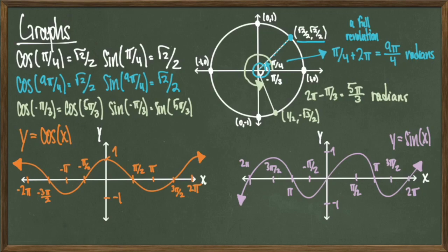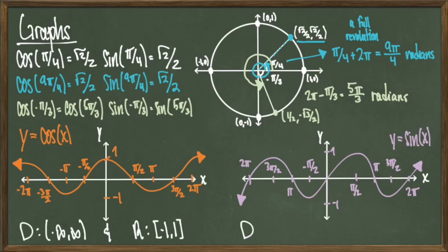Some basic properties of these functions are that they both have the same domain and range. The domain for sine and cosine of x is all real numbers, and the range is negative 1 to positive 1, inclusive.